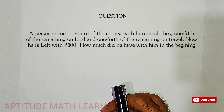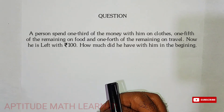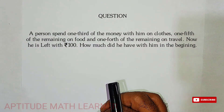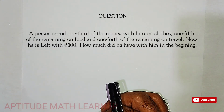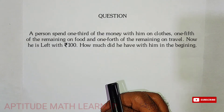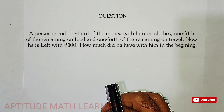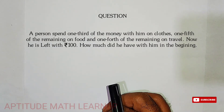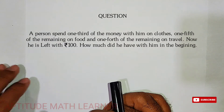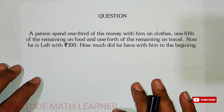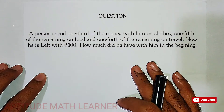Welcome to our YouTube channel Aptitude Math Learner. Today we have a question: a person spent one-third of the money with him on clothes, one-fifth of the remaining on food, and one-fourth of the remaining on travel. He is left with 100 rupees. We have to find the total amount he had in the beginning.